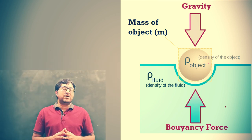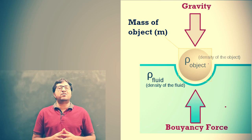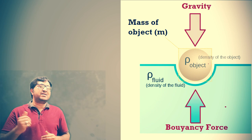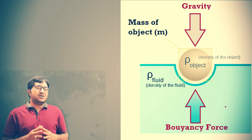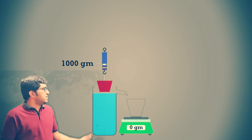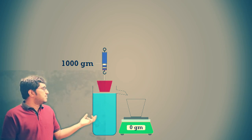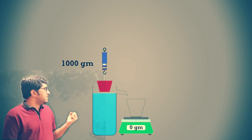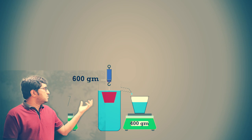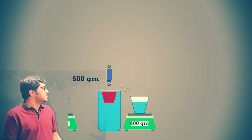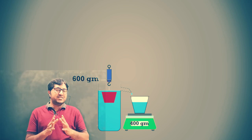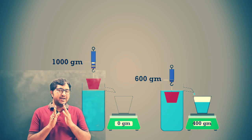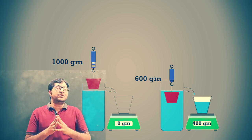Practically, whenever we measure the weight of any object inside water, it is less than the weight measured in air. For example, consider one object whose weight is 1000 grams or one kilogram in air. The same object, when submerged in liquid measured through a spring balance, shows a weight of 600 grams. The loss in weight is 400 grams, and this loss is due to the buoyancy force.